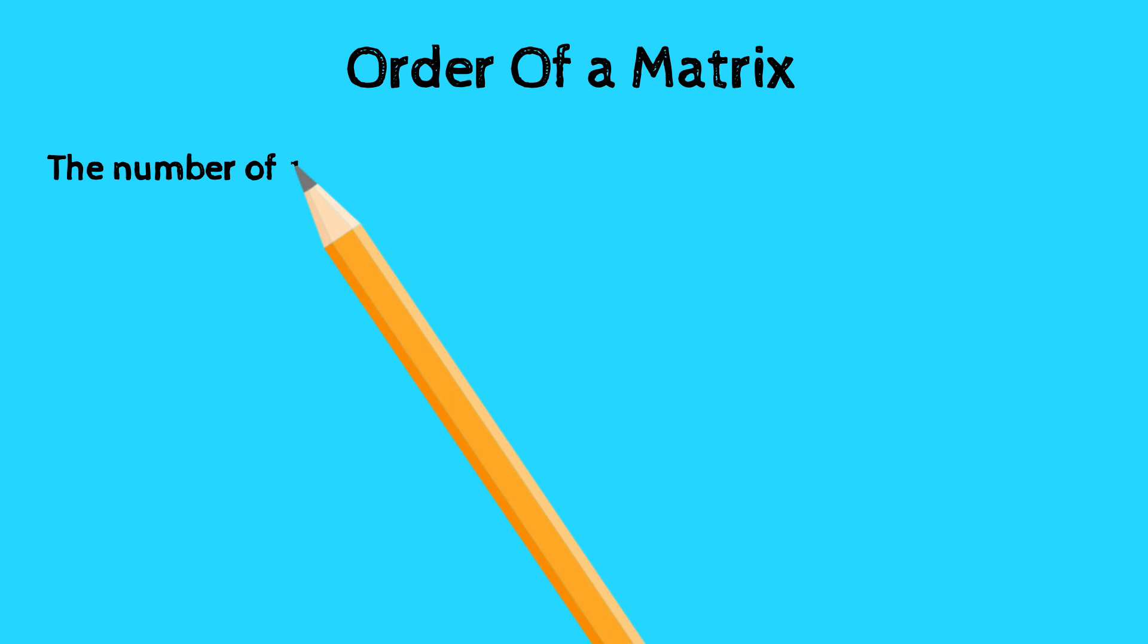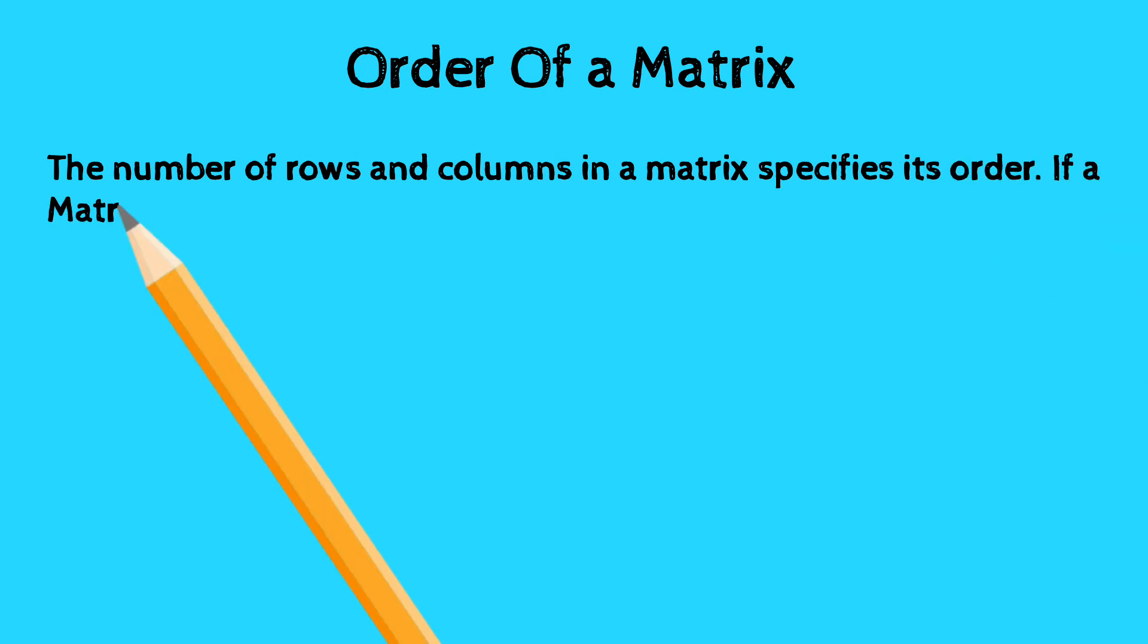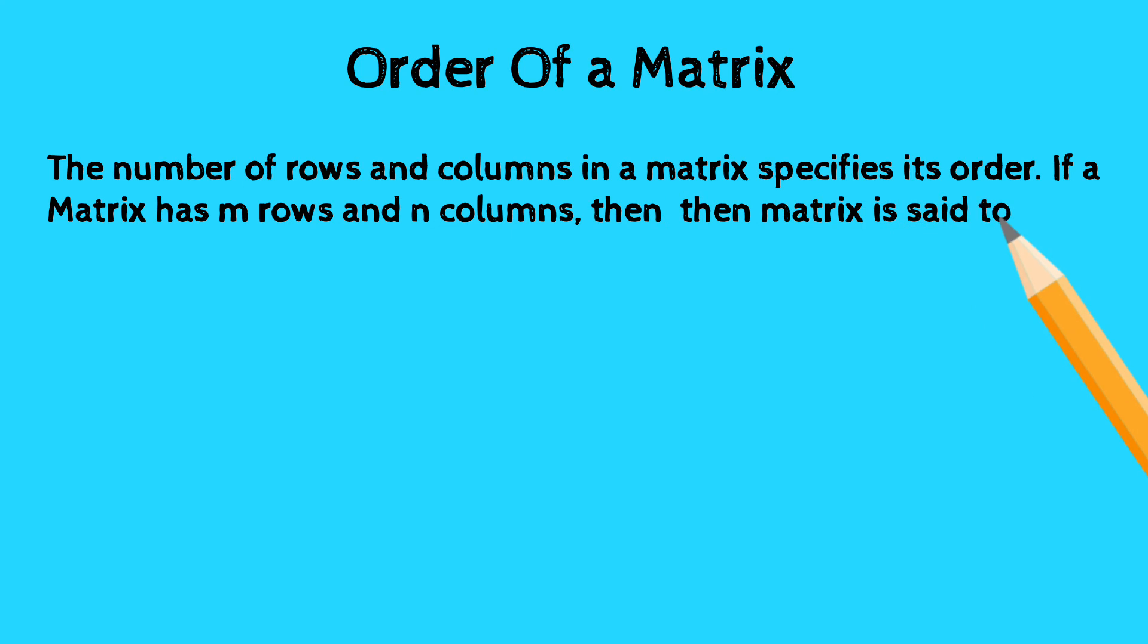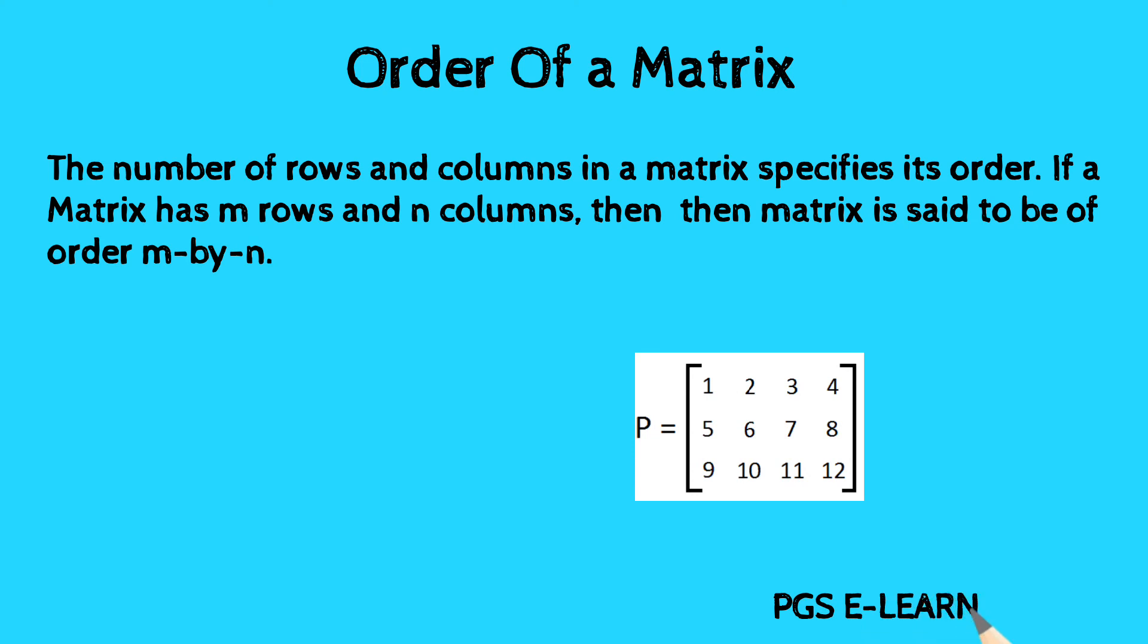Next point is order of a matrix. The order of a matrix is defined as the number of rows and columns in a matrix. If a matrix has m rows and n columns, then the matrix is said to be of order m-by-n. Let's see the previous example.